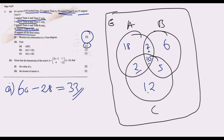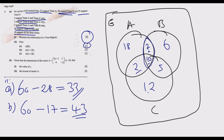Part (ii): find (A∩B) complement — fans that do not support both A and B simultaneously. Those who support both A and B are 10 plus 7, which equals 17. So the complement is 60 minus 17, which equals 43. Alternatively, adding 18 plus 2 plus 12 plus 5 plus 6 also gives 43. That's how we answer this part.